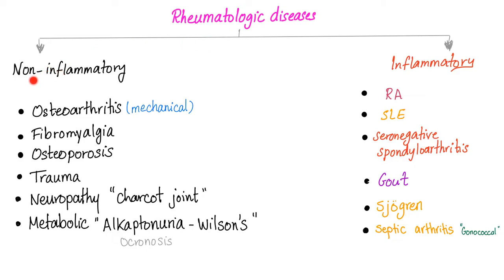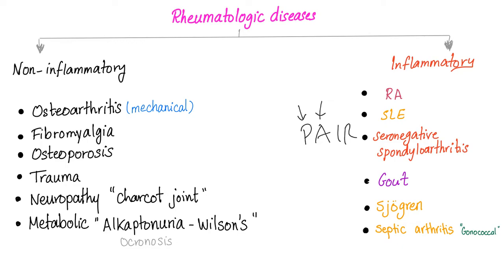Rheumatological disease can be divided into non-inflammatory and inflammatory. Osteoarthritis is non-inflammatory. Rheumatoid arthritis is inflammatory. Other non-inflammatory diseases include fibromyalgia, osteoporosis, trauma, neuropathy such as Charcot joint, and metabolic conditions like alkaptonuria and Wilson's disease. Inflammatory diseases include rheumatoid arthritis, lupus, seronegative spondyloarthropathies (PAIR — psoriatic arthritis, ankylosing spondylitis, IBD-related arthritis, reactive arthritis), gout, Sjögren's, and septic arthritis.